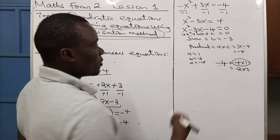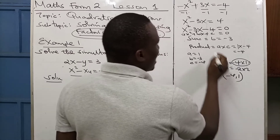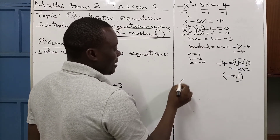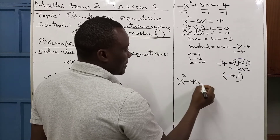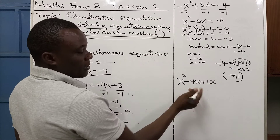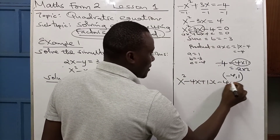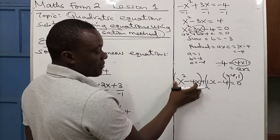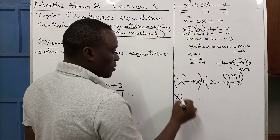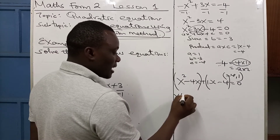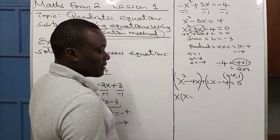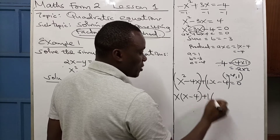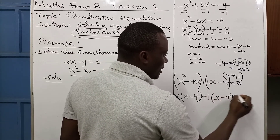So we replace minus 3x with minus 4x plus x, giving: x squared minus 4x plus x minus 4 equals zero. We can verify: minus 4x plus x equals minus 3x. We now put into two brackets. From the first group, x squared minus 4x, there is a common factor of x: we get x(x minus 4). From the second group, plus x minus 4, the common factor is 1: we get 1(x minus 4). So we have (x minus 4)(x plus 1) equals zero.